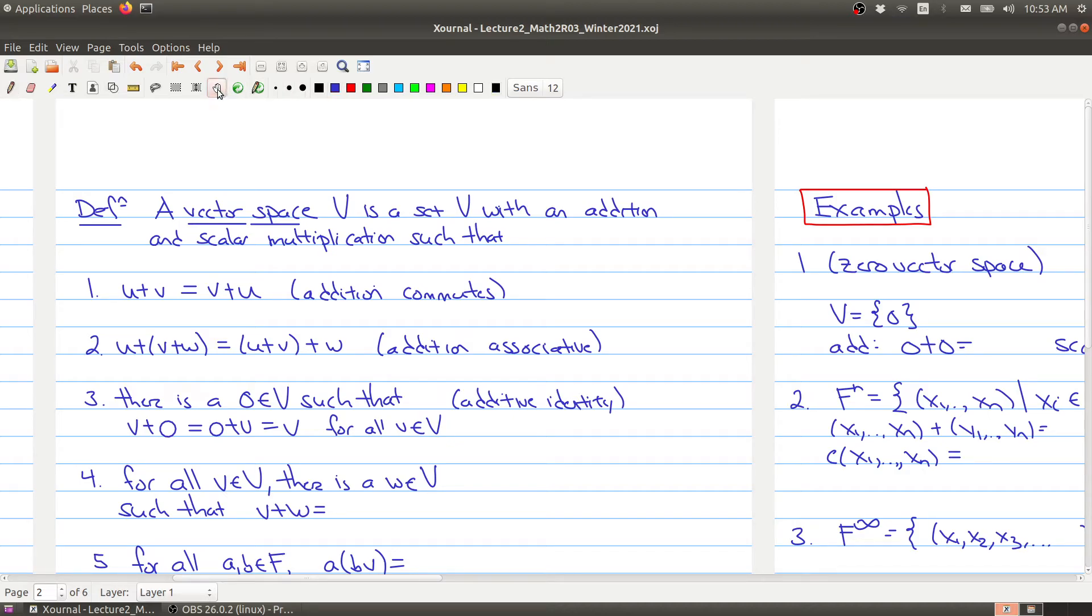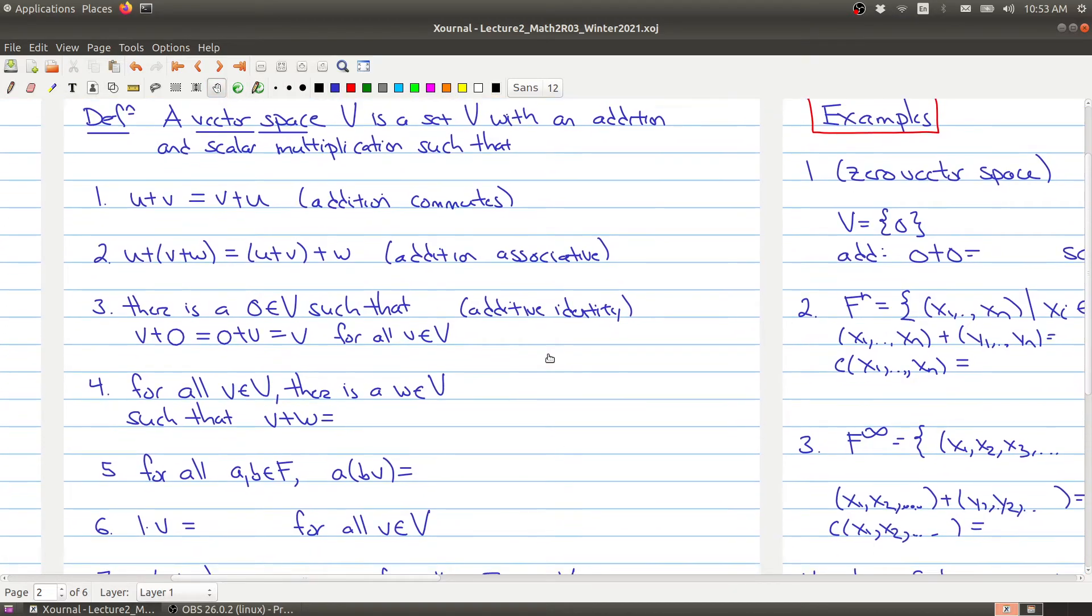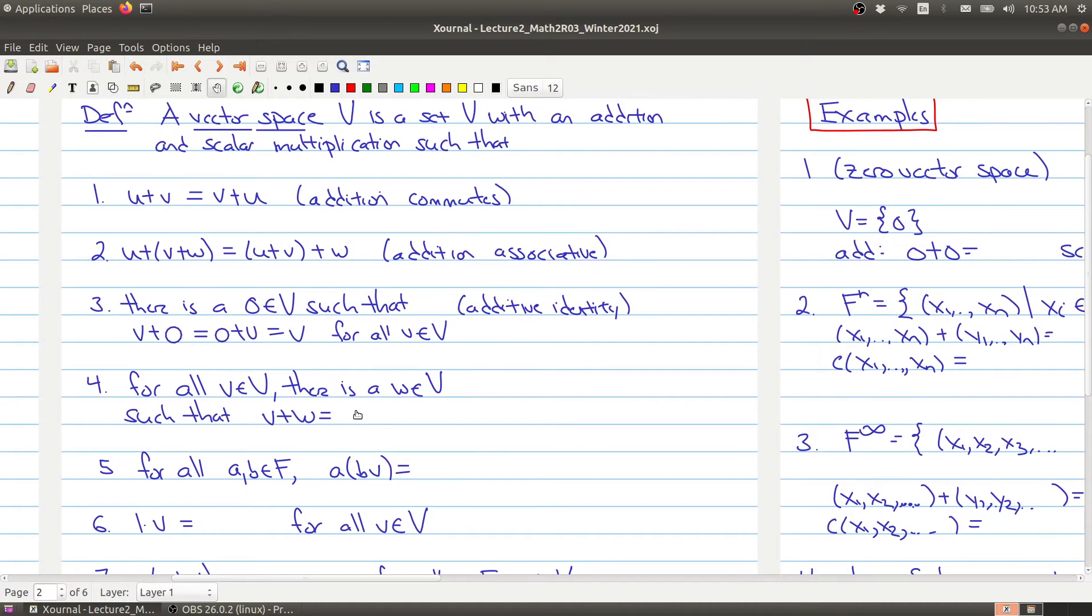The other property we have with respect to addition is that for every V that I take in my set capital V, there's another element W such that I can take V and add W and get back the zero vector. This is saying that each element has an additive inverse.